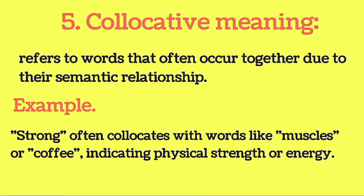The next type of meaning is collocative meaning. Collocative meaning refers to words that often occur together due to their semantic relationship. For example, 'strong' often collocates with words like 'muscles' or 'coffee,' indicating physical strength or energy. So this kind of meaning is called collocative meaning.